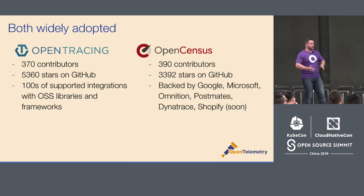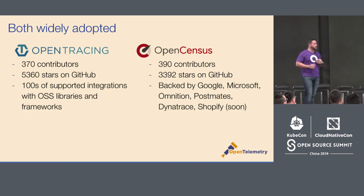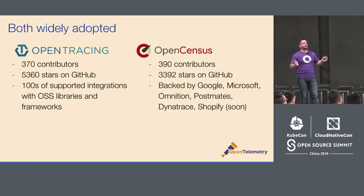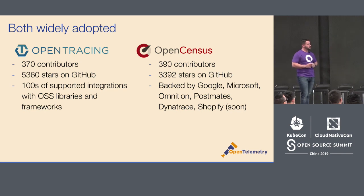From an adoption perspective, both had very healthy ecosystems. They were very active on GitHub, with a lot of contributions backed by a wide range of contributors. On the OpenCensus side, Omnition was one of the companies alongside Google and Microsoft to basically form OpenCensus and build the client libraries as well as the OpenCensus service. The service was made up of an agent and a collector — basically the implementation side of the house that was missing from OpenTracing.